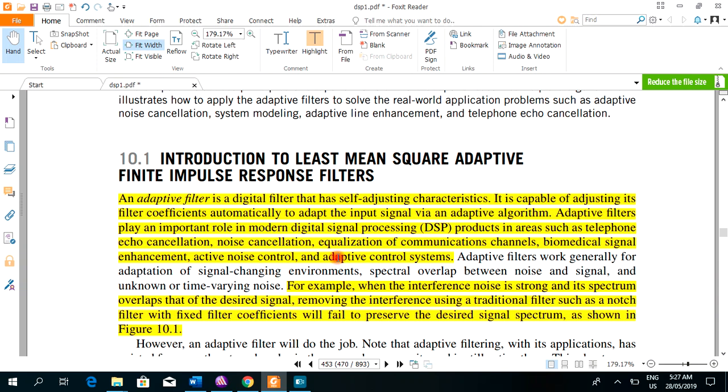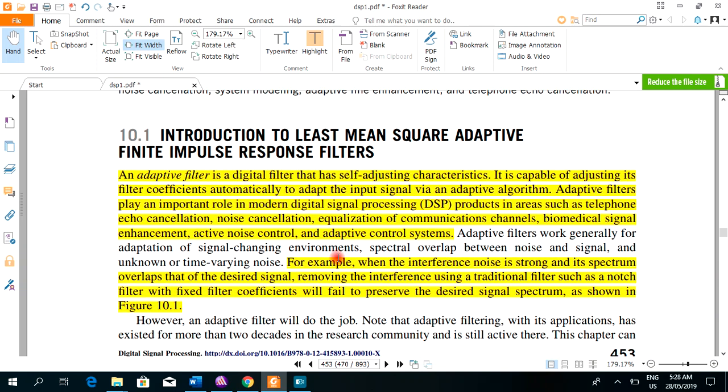For example, when the interference noise is strong and its spectrum overlaps that of the desired signal, removing interference using a traditional filter such as notch filter with fixed filter coefficient will fail.